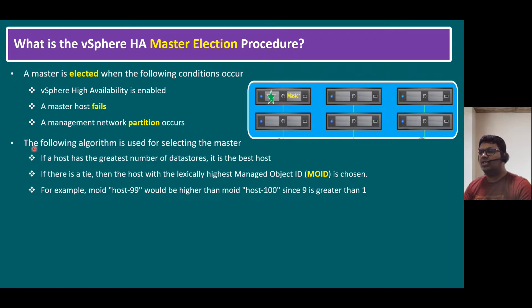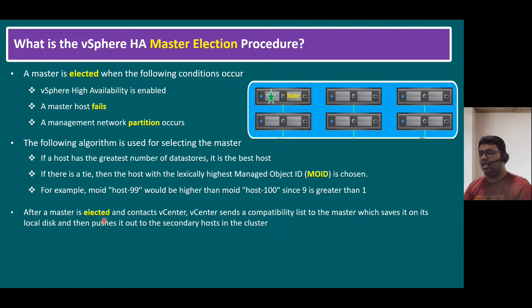The following algorithm is used for selecting the master. If your host has the greatest number of datastores — whichever host consists of more datastores is the best candidate. If there is a tie, then the host with the lexically highest managed object ID, MOID, is chosen. For example, MOID host-99 would be higher than MOID host-100, since nine is greater than one. After the master is elected and contacts vCenter, vCenter sends the compatibility list to the master, which saves it on its local disk and then pushes it out to the secondary hosts in the cluster.